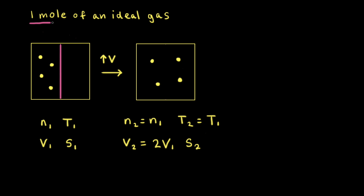In our first situation, we're starting off with one mole of an ideal gas in a container. The container has a removable divider separating it into two compartments. We go ahead and remove the divider, and now our gas particles are free to travel around in a larger volume. So if the initial volume is V1, we have twice the volume for the final volume — therefore V2, the final volume, is equal to two times V1.